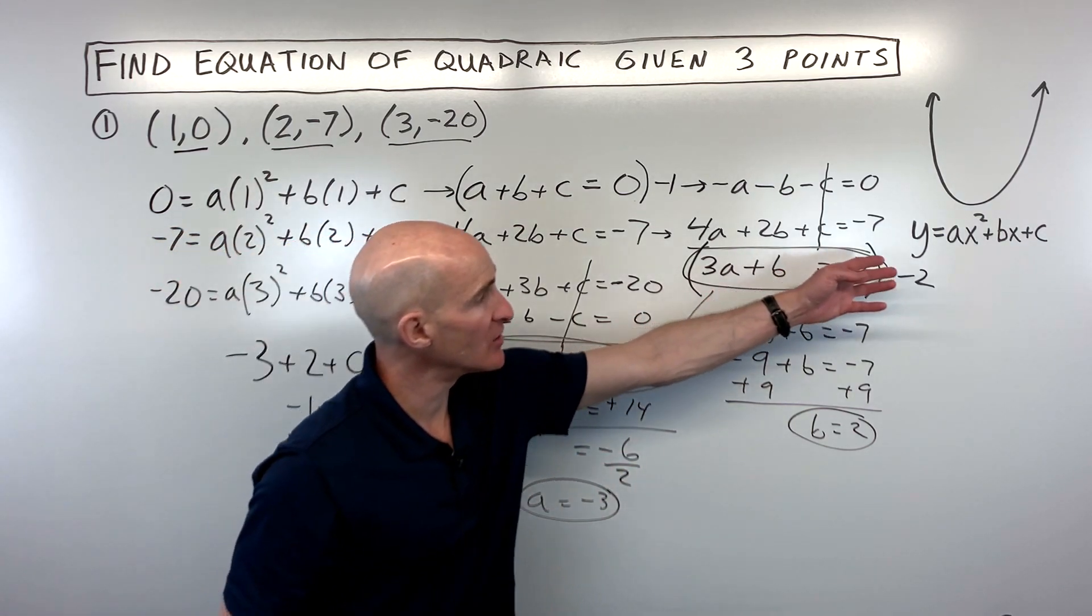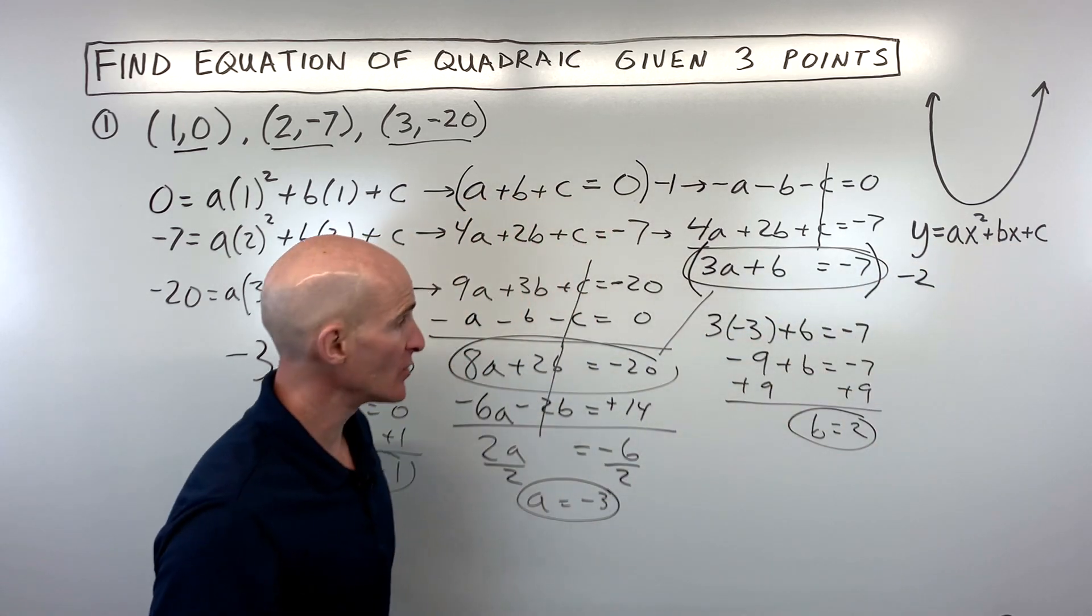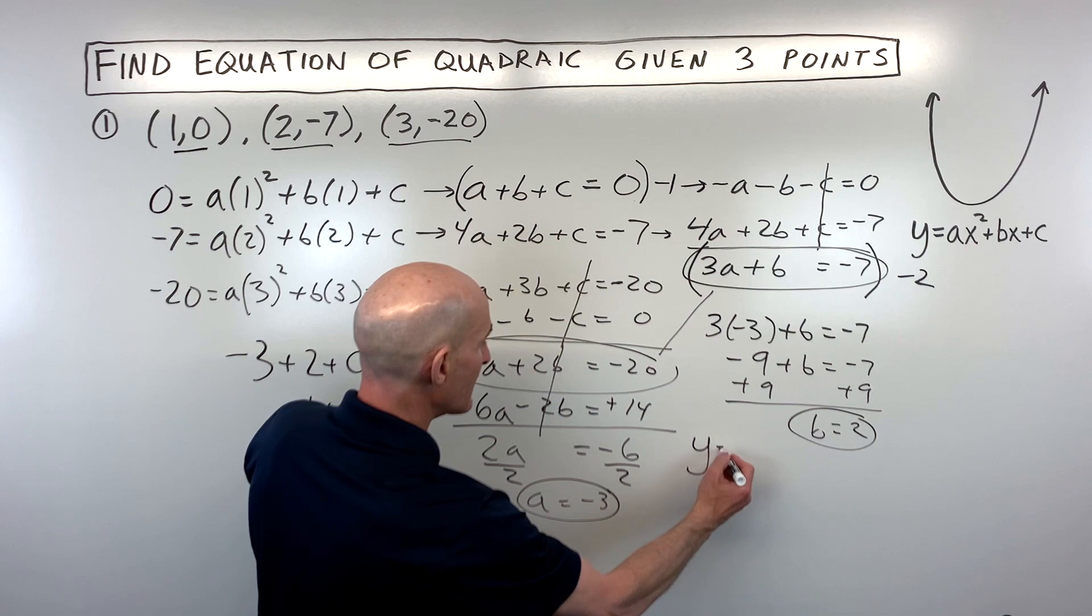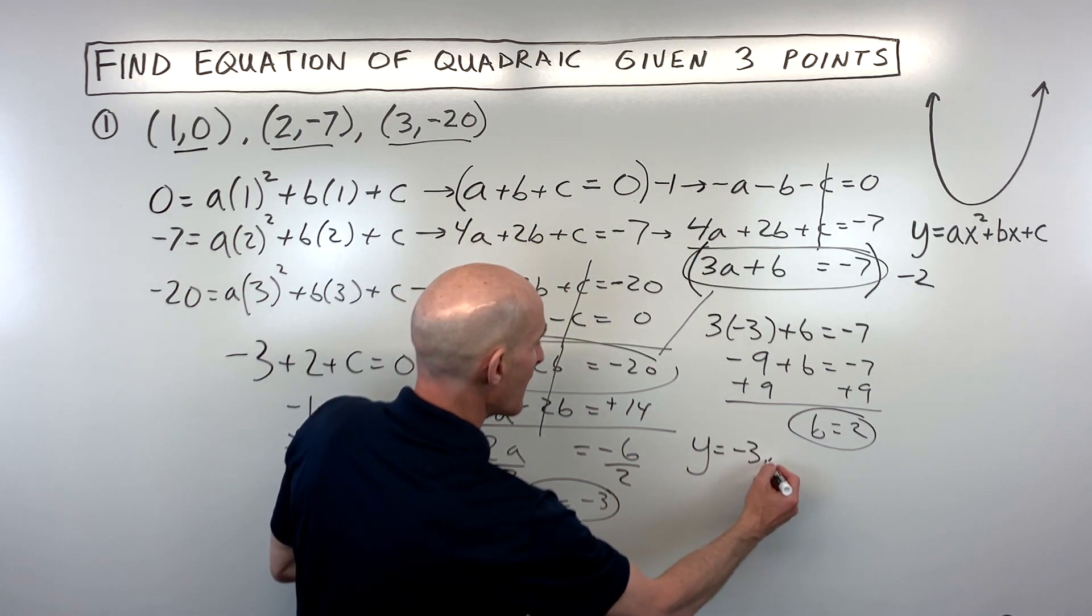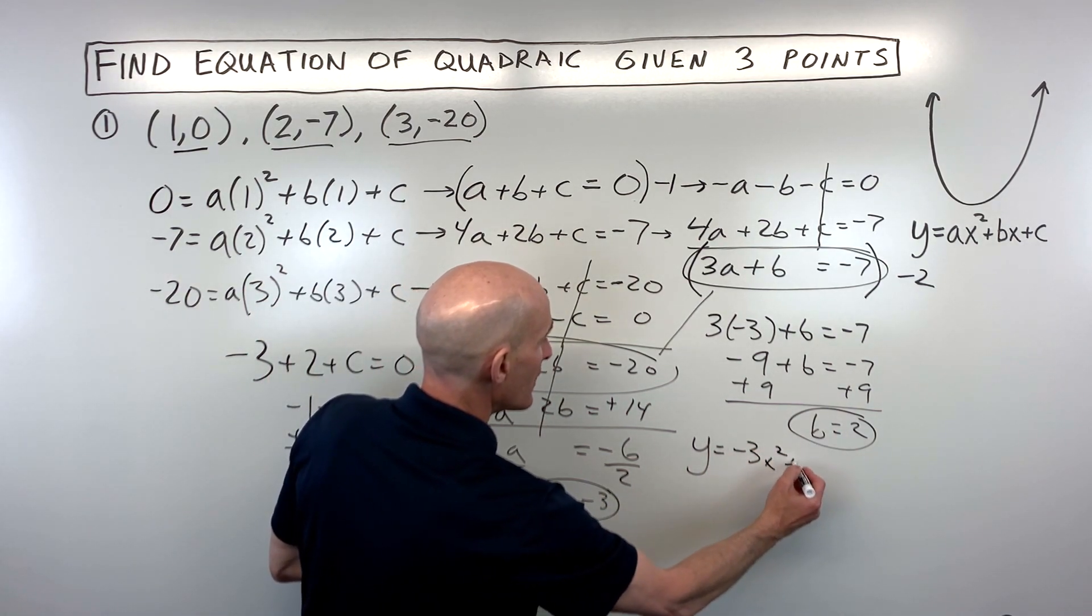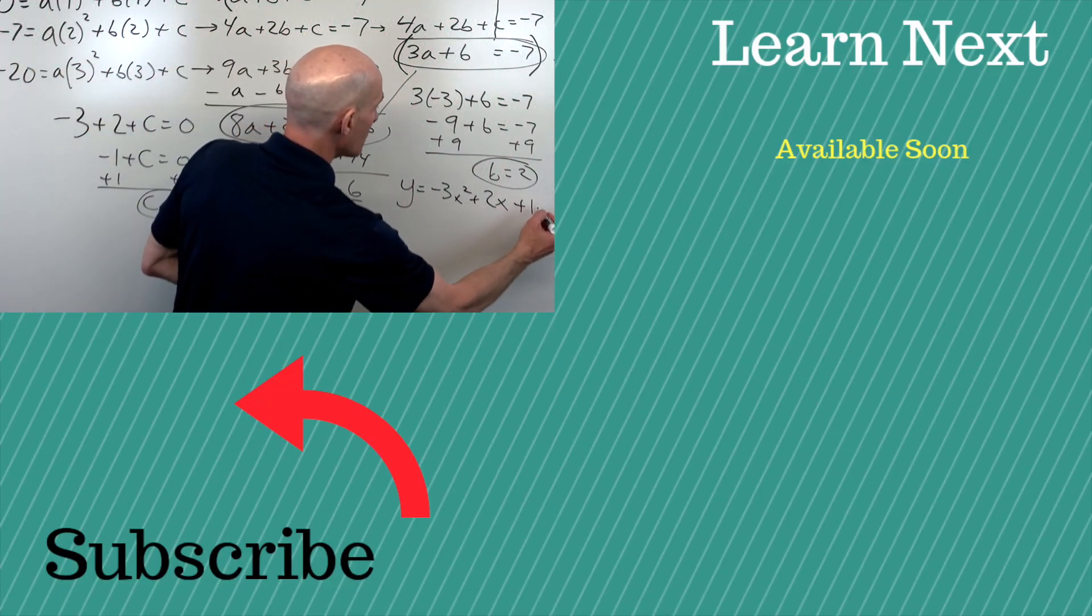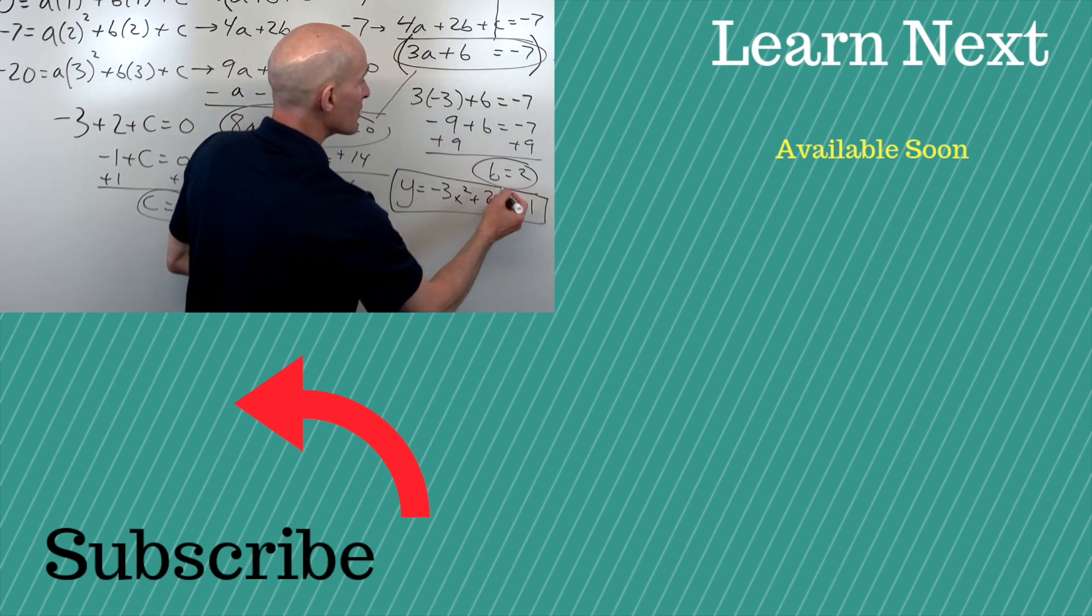All we have to do now is put it in for a, b, and c here. And that's going to be the equation of our quadratic. So let's go ahead and do that. So that comes out to y equals negative 3x squared plus 2x plus 1. And that's the equation of our parabola.